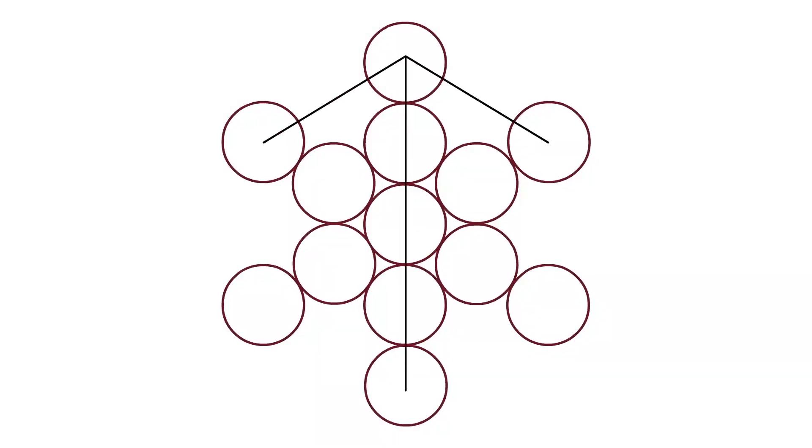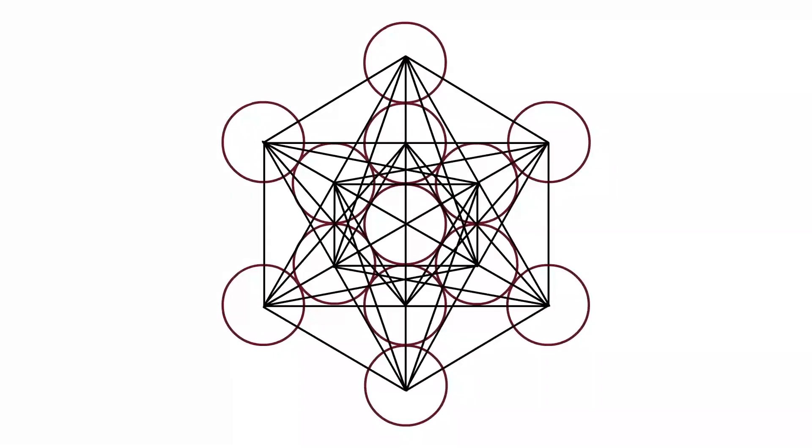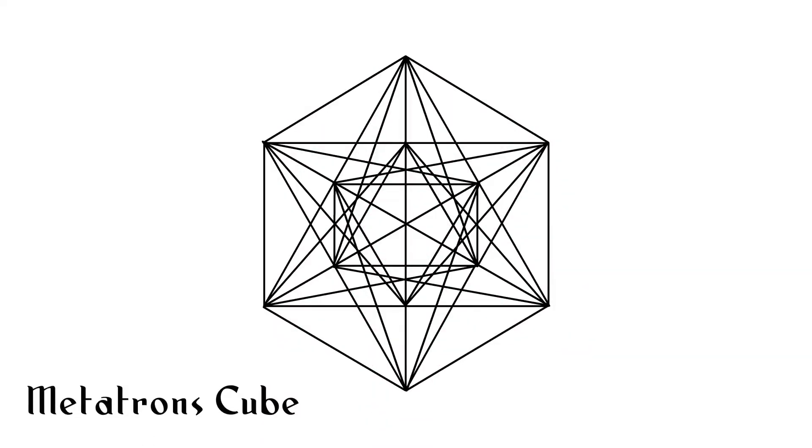What you do is draw a straight line from the very center of every single circle to every other circle in this image. When you do this, you get an image which is known throughout the universe everywhere as Metatron's Cube. It is one of the most important informational systems in the universe. One of the basic creation patterns in existence.